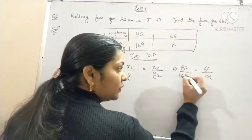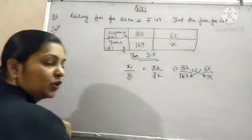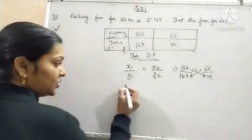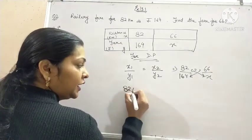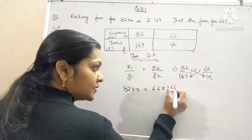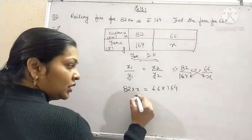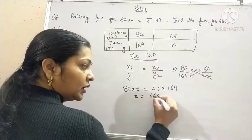Now how to solve it. You can solve it by cross multiplication. You will get 82 into x is equal to 66 into 164. Now this 82 is in multiplication, it will go in division.